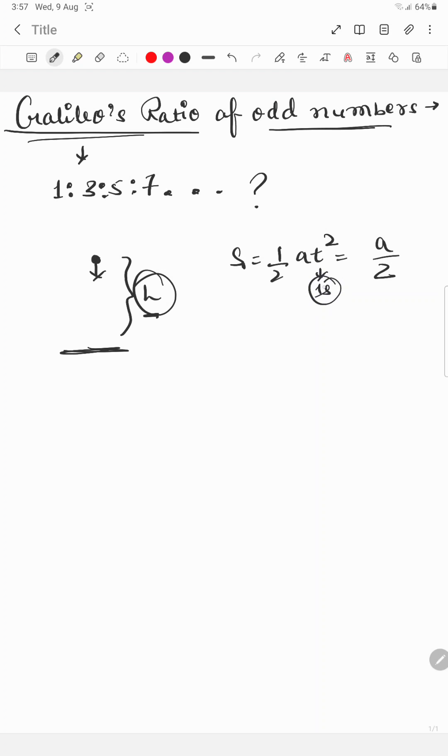Now distance covered in the second second: it will be half into a into 2 squared minus half into a into 1 squared, as it is not asked in 2 seconds, it is asked in the second second.